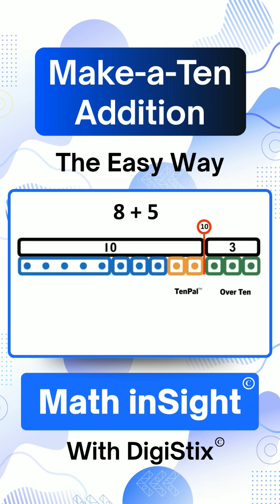Then we add the number over 10, which is 3. We know that 10 plus 3 equals 13. So, 13 is the total in the addition problem, 8 plus 5.